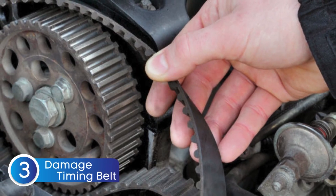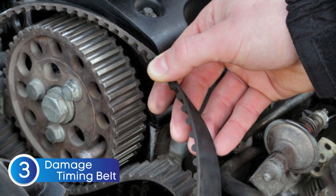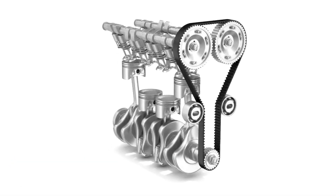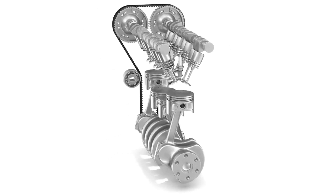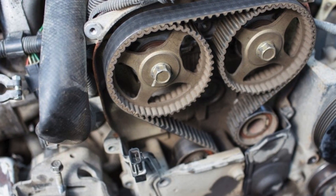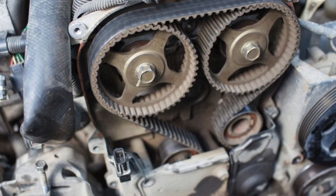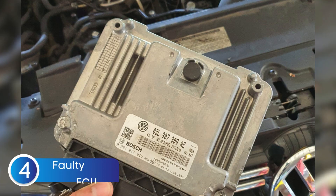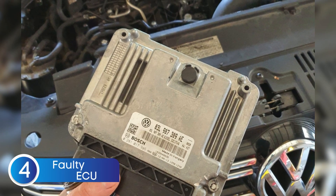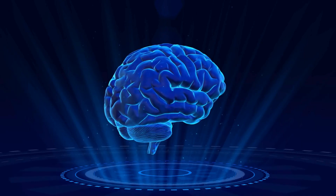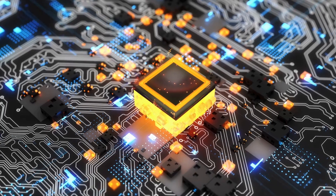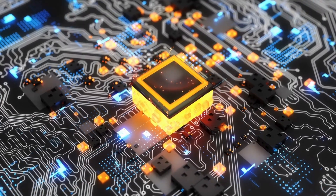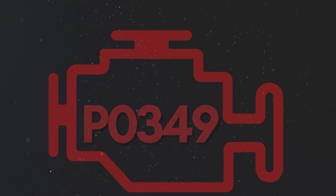The third cause is a faulty timing belt or chain. The camshaft is driven by the crankshaft through a timing belt or chain, and if it jumps a tooth or becomes misaligned, it throws off synchronization between the camshaft and crankshaft, mimicking a sensor failure and triggering P0349. The fourth cause is ECU failure or software issues — while rare, the ECU can develop internal faults or software glitches that cause it to misread camshaft sensor signals and trigger P0349, even if the sensor and wiring are fine.